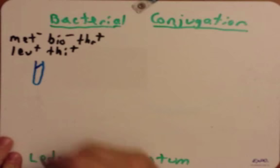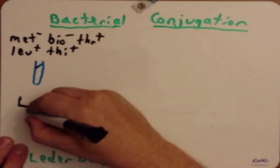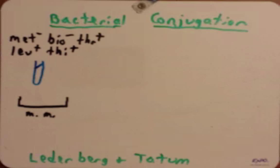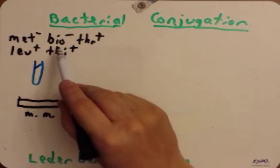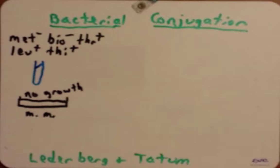They then took this culture and plated it on minimal media. Remember, minimal media only contains the nutrients essential for bacterial life: water, sugar, and salts. It doesn't contain any of these amino acids. So since this bacteria lacks the ability to make Methionine or Biotin, we get no growth. It's an auxotroph for Methionine and Biotin.